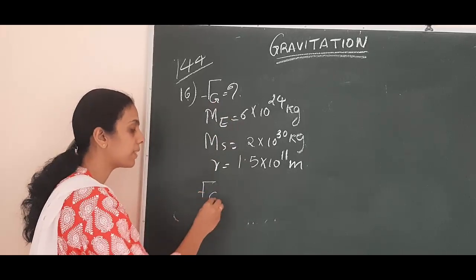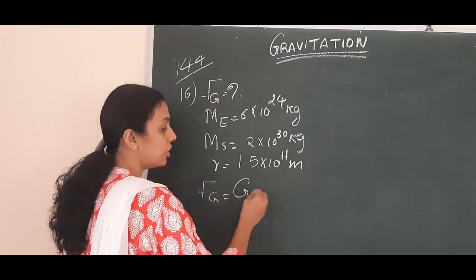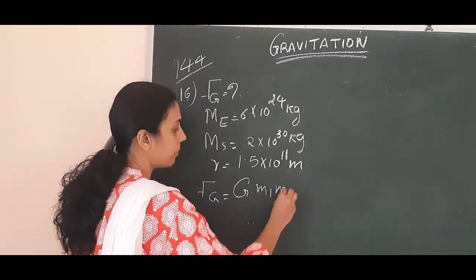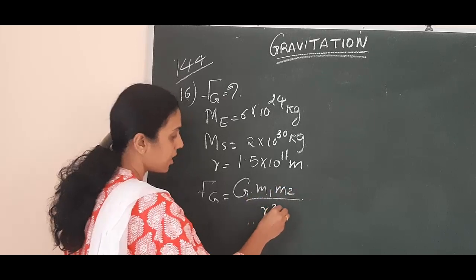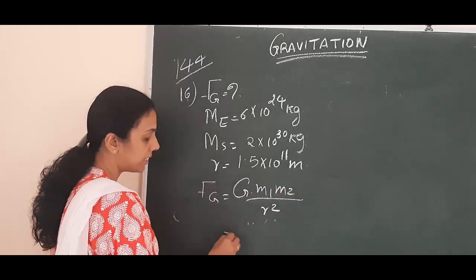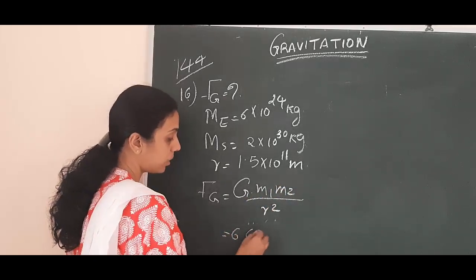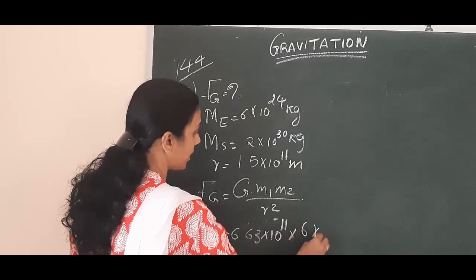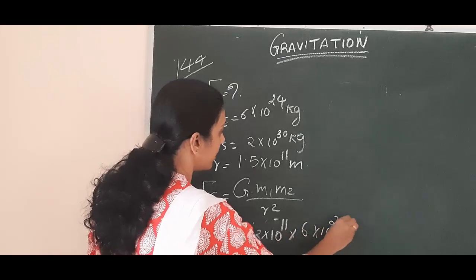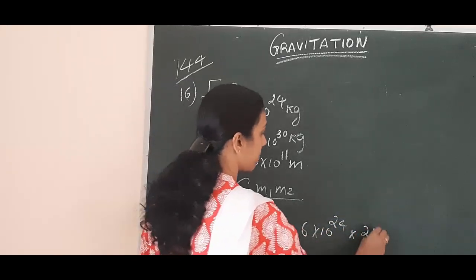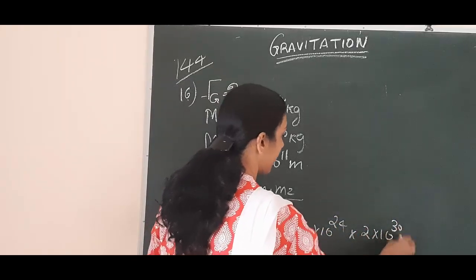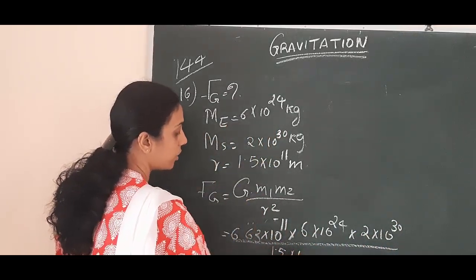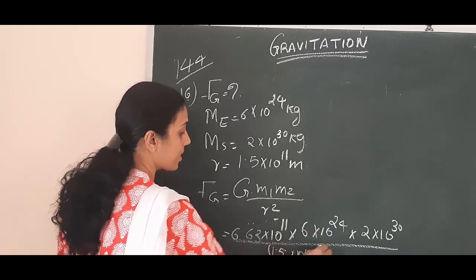How we can find out the force of gravitation? That is equal to the universal law of gravitation: F equals G into m1 m2 divided by r square. The value of G is 6.63 into 10 to the power minus 11. So we substitute: 6.63 into 10 to the power minus 11, into 6 into 10 to the power 24, into 2 into 10 to the power 30, divided by r square, where r square is 1.5 into 10 to the power 11, the whole square.